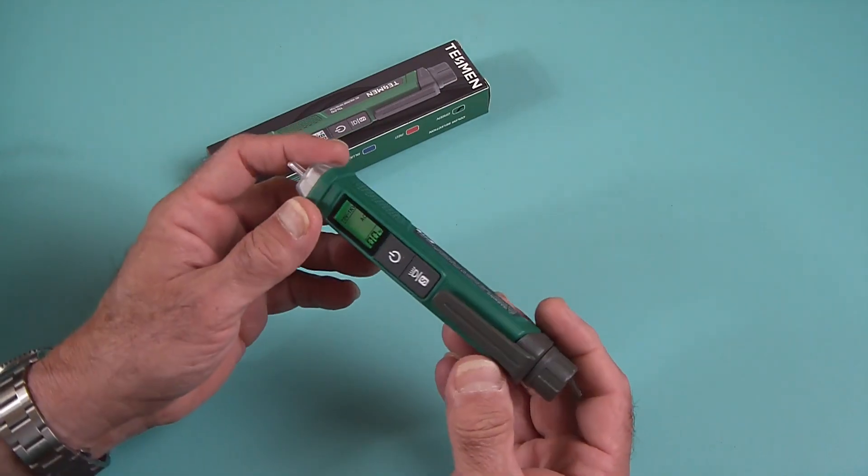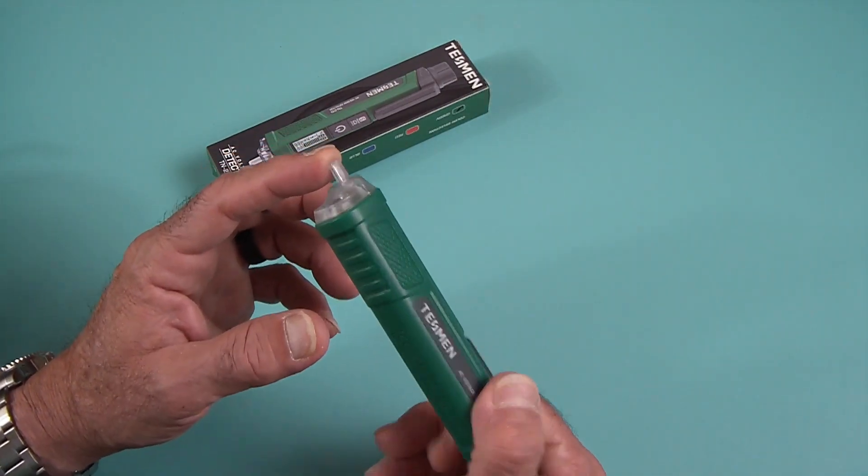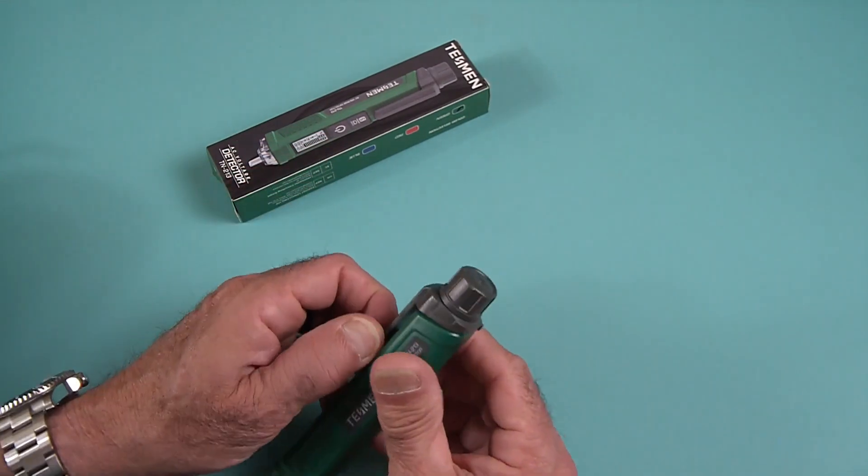It has a safety cover on the probe so you don't actually go into touching any metal, and it has a pocket clip.